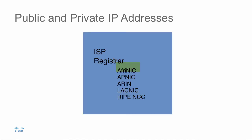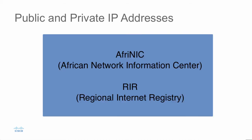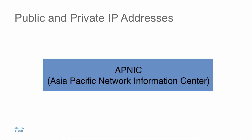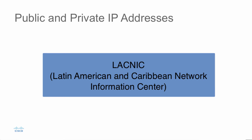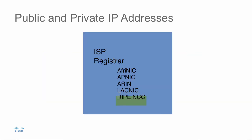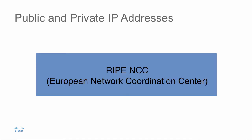Those registrars include AFRINIC, which is the African Network Information Center — a Regional Internet Registry in Africa. We have APNIC, which is the Asia Pacific Network Information Center. We have ARIN in the United States. We have LACNIC, which is the Latin American and Caribbean Network Information Center. And we have RIPE NCC, which is the Network Coordination Center in the European area. Each of these receives their allocation directly from IANA, and then they, in turn, can allocate to internet service providers. These would be regional internet registrars.